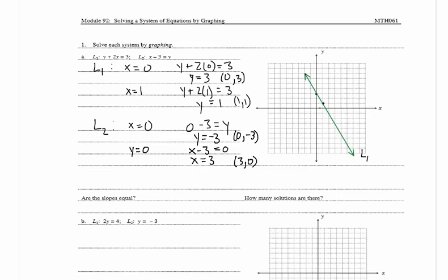Now let's plot the two points for L2: (0, -3) and (3, 0). Then we're going to draw a line through those two points and label it L2. Looking at the graph, the solution is where the two lines intersect, which is right here at (2, -1).